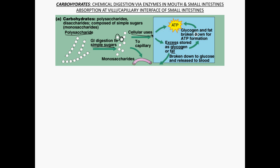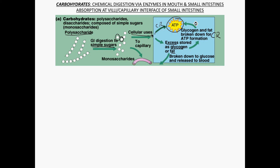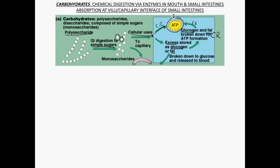Most likely, the monosaccharides get broken down through aerobic cell respiration to produce ATP for the cell to use. We can also break down stored glycogen or fat to run cell respiration. This is the main importance of carbohydrates at the cellular level — they are used in aerobic cell respiration to make ATP for the cell to function.